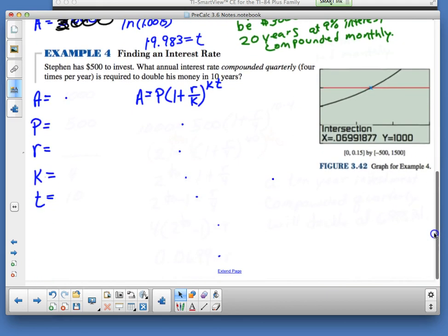Now it's your turn. Stephan is going to invest $500. What annual interest rate compounded quarterly, four times per year, is required to double his money in 10 years? First of all, just plug everything in. Right now, you don't have R. So plug everything right off the bat. It's compounded quarterly, so my K is 4. My T is 10 years. My P is 500. Let's pop those in.